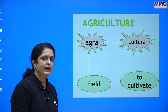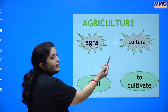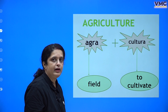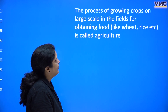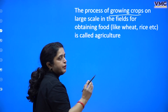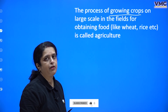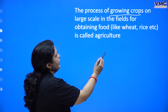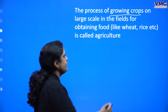What does the word agriculture mean? The word agriculture can be split into 'agra' plus 'cultura'. Agra means field and cultura means to cultivate — so it is to cultivate the fields. Growing one or two plants in your balcony or so-called garden is not cultivation or agriculture. The process of growing crops on a large scale in the field for obtaining food for our own use is known as agriculture.